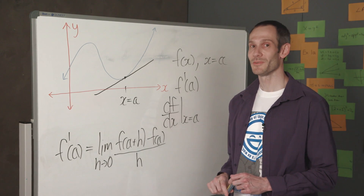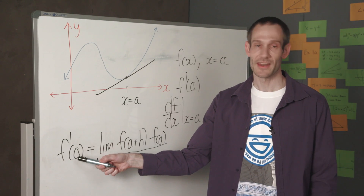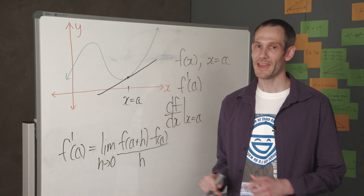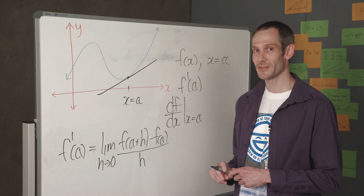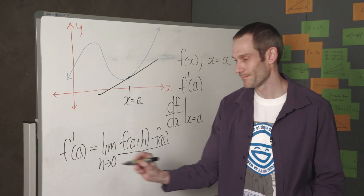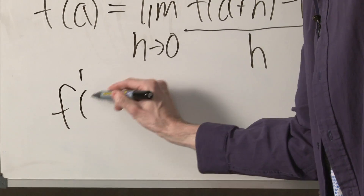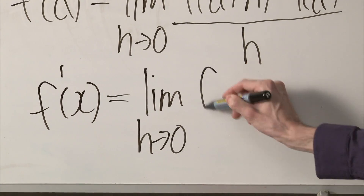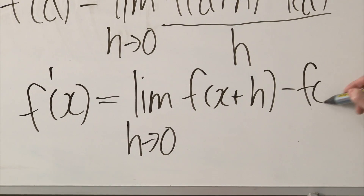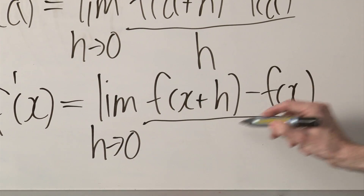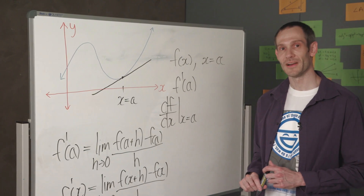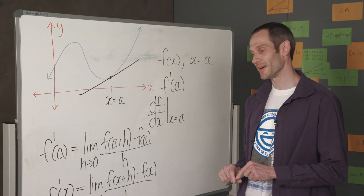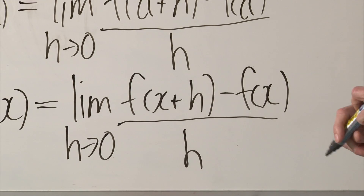So this definition talks about the derivative of a function at a specific point a. However, if I go ahead and replace that a with any value of x in the domain of the function, I get the following definition. That is, the derivative of a function at a point x equals the limit as h goes to 0 of f of x plus h, take f of x, divide it by h, for any value of x in the domain of the function where this limit exists. So to work out the derivative of a function, we use this limit definition of a derivative.